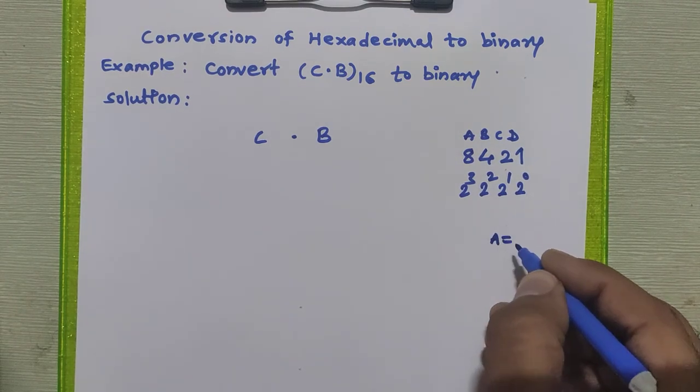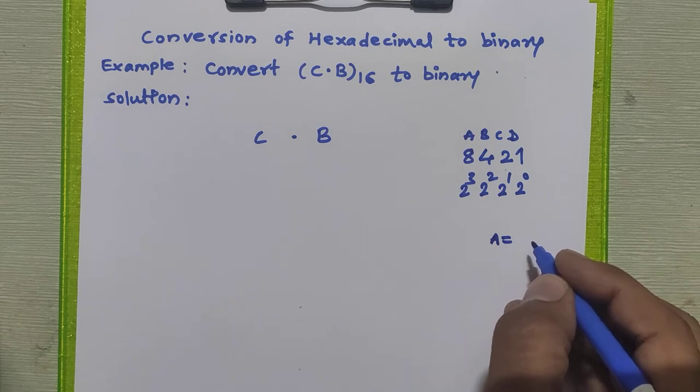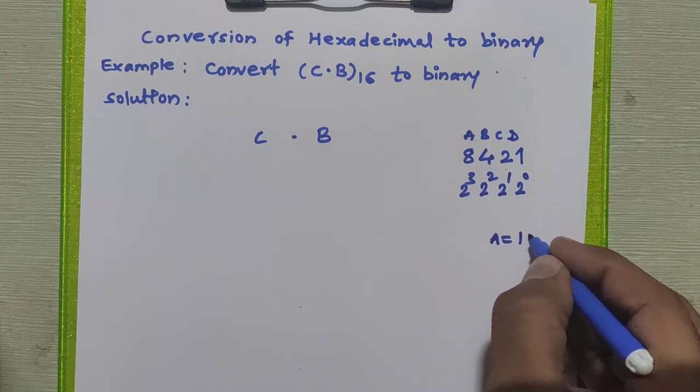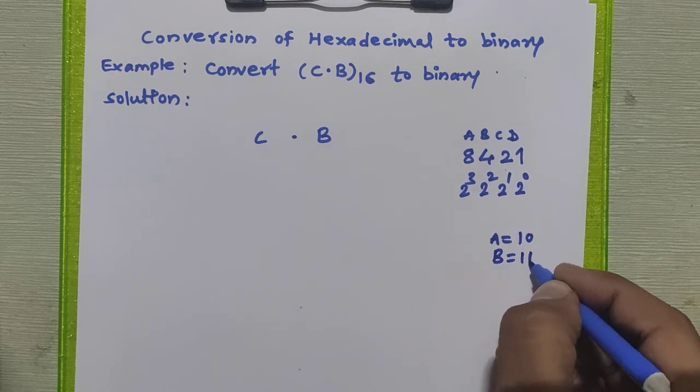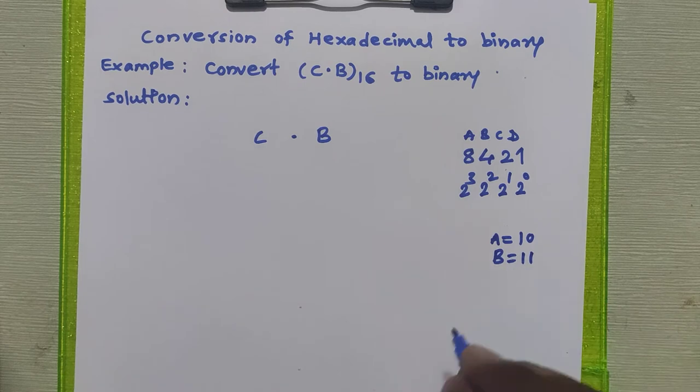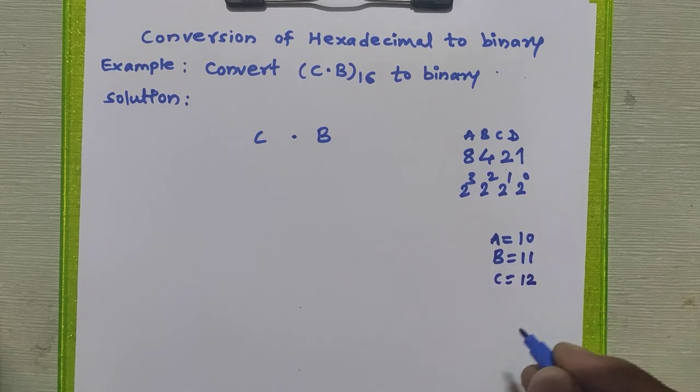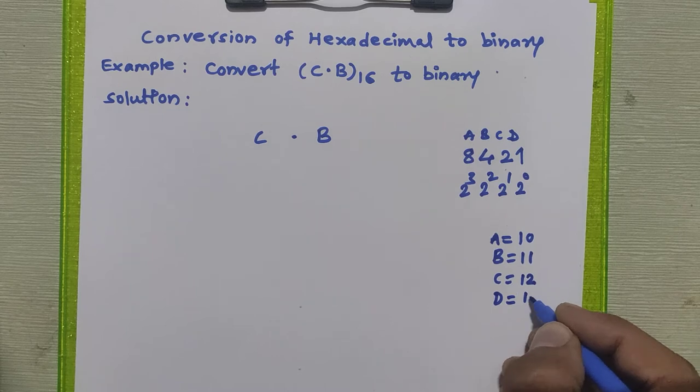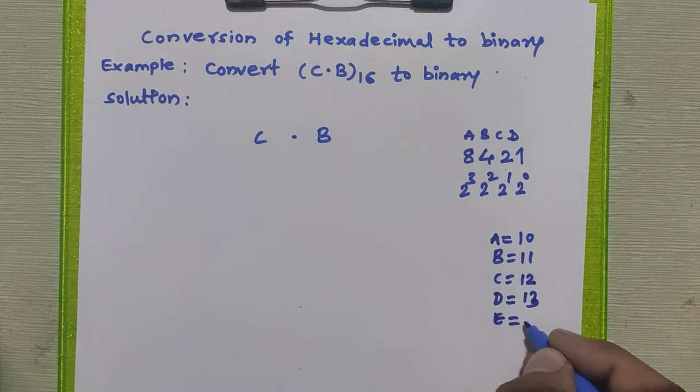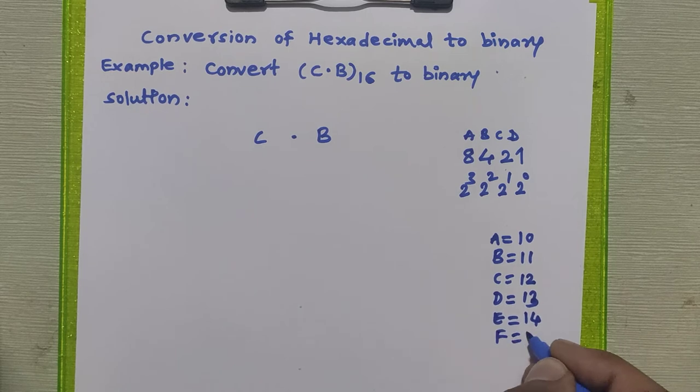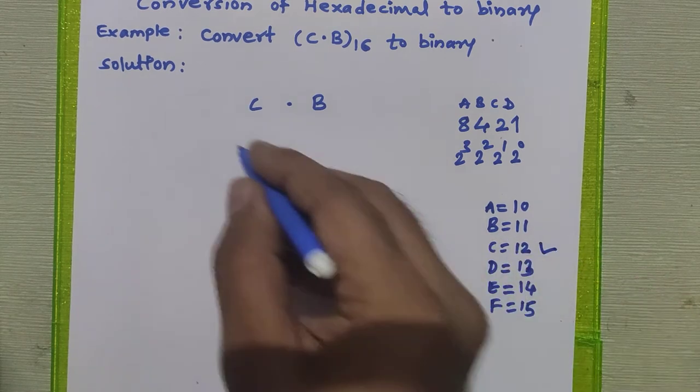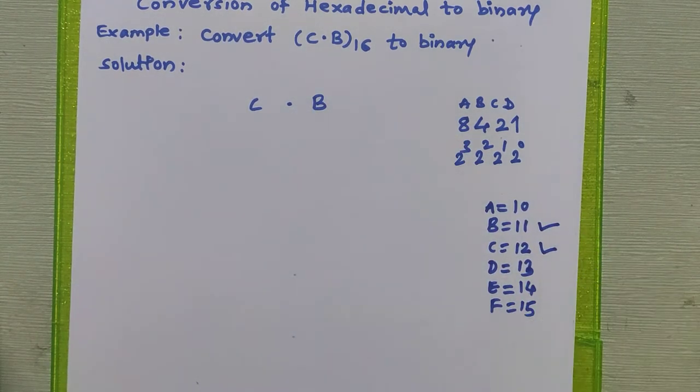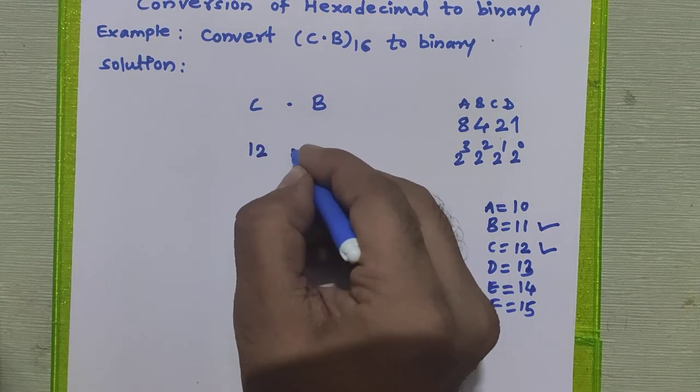In hexadecimal number system there are total 16 digits, 0 to 9 digits. We use alphabet A for representing 10, alphabet B for representing 11, we use alphabet C for representing 12, D for 13, E for 14, F for 15. Now what is C? C is 12. And what is B in this hexadecimal? It is 11. So I can say it is 12.11.